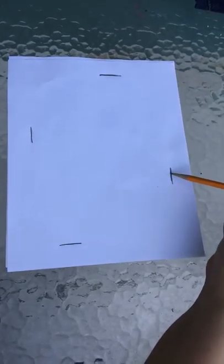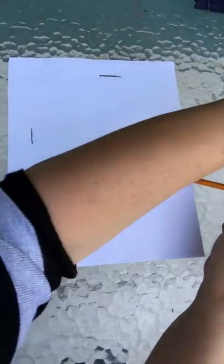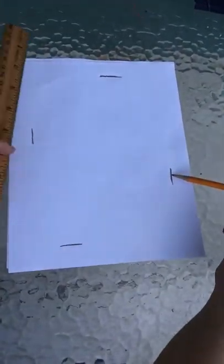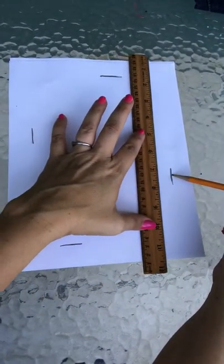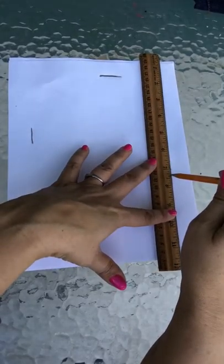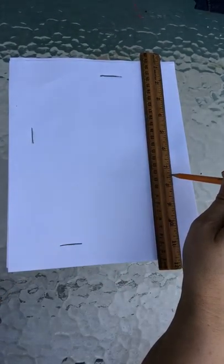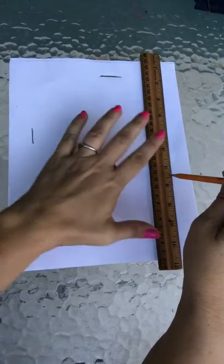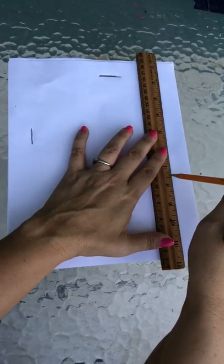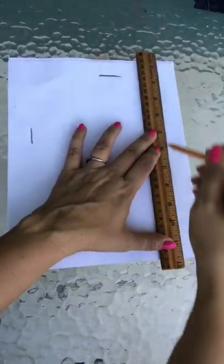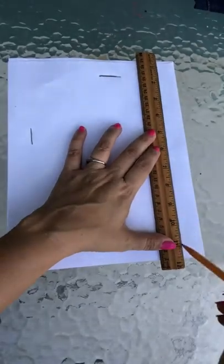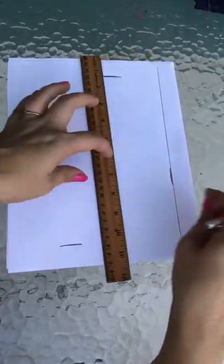Now we put our pencil down on the line and just slide the ruler and touch the ruler next to the pencil. Try to line it up straight and lightly make a line. Put your pencil on the top mark.